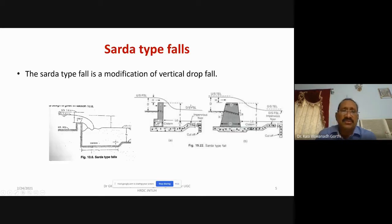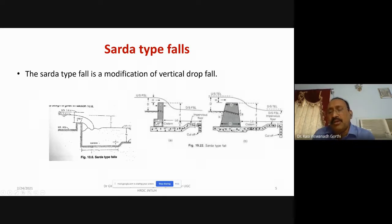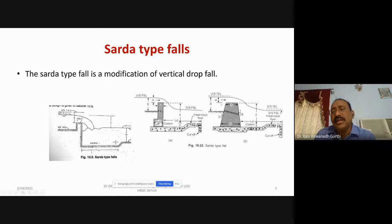In the figure, you can see a Sarda type of fall where the crest wall (also called body wall) is shown. This is the crest level. The upstream total energy level and H is the head over the crest — that is, the head over the sill.